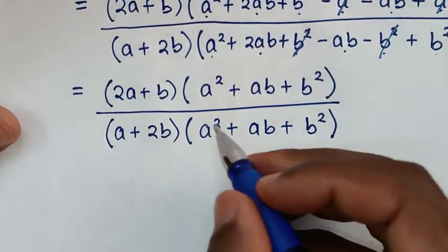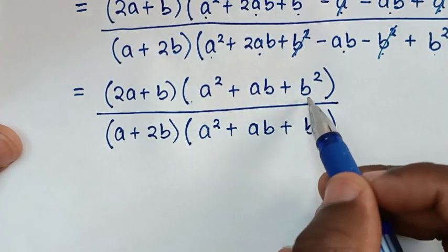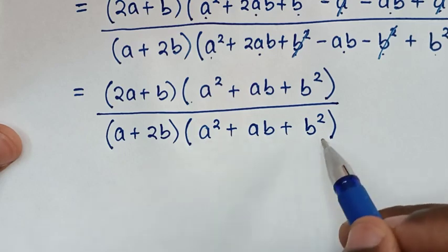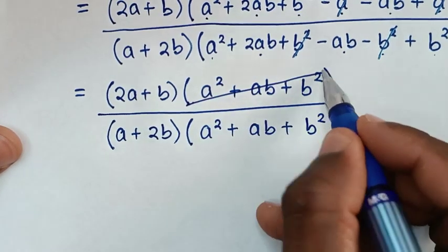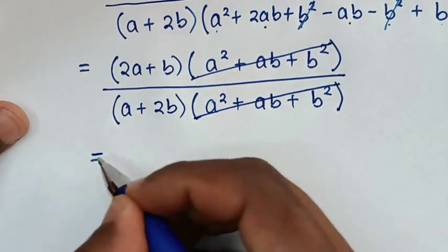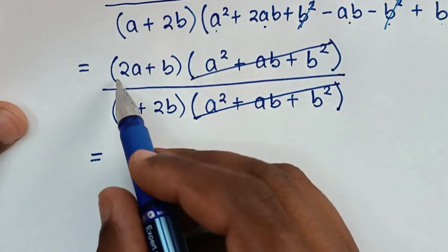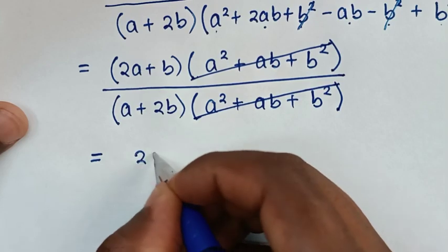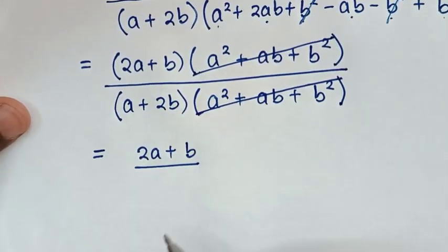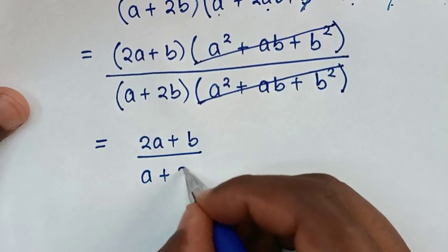Then, from here, in the numerator, we have A square plus AB plus B square. Also, in the denominator, A square plus AB plus B square. So, this and this will cancel. Then, it will be equal to 2A plus B, then over this, which is A plus 2B.